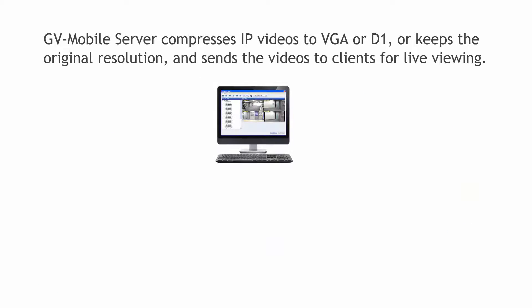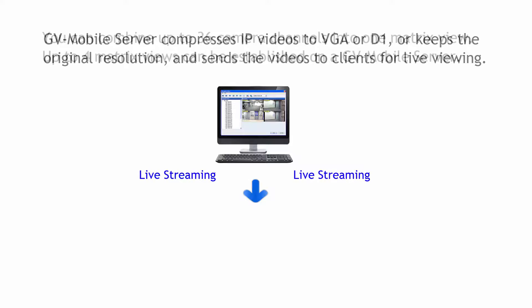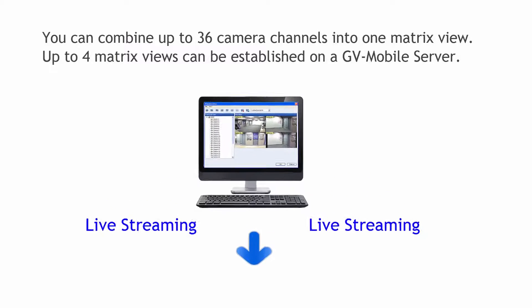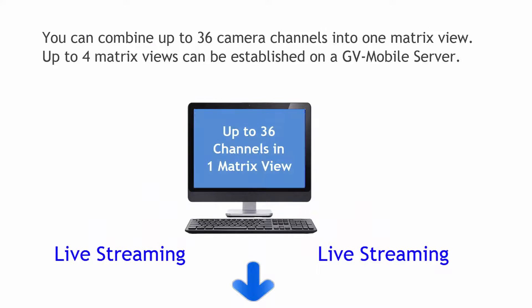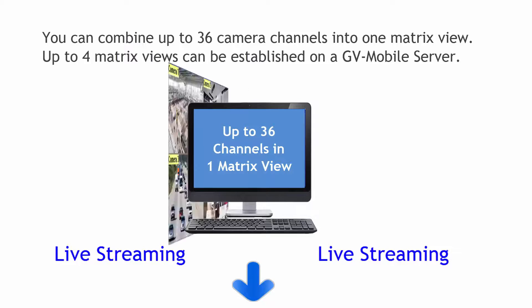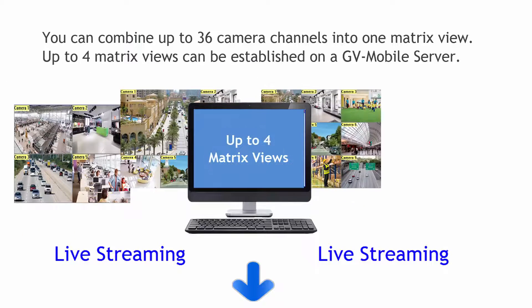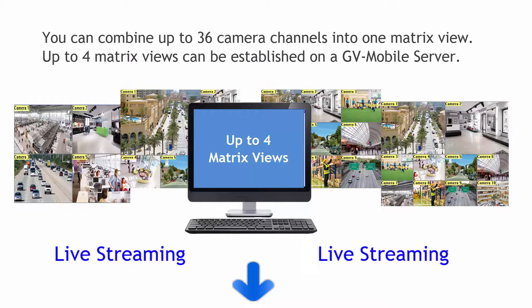The mobile server compresses IP videos to VGA or D1, or keeps the original resolution, and sends IP videos to clients for live viewing. You can combine up to 36 camera channels into one matrix view, and up to four matrix views can be established on the GV Mobile Server.